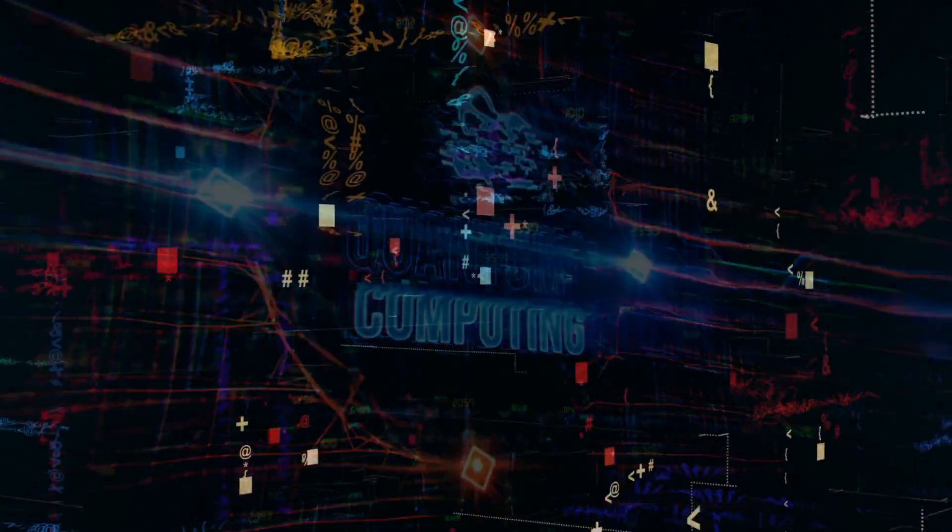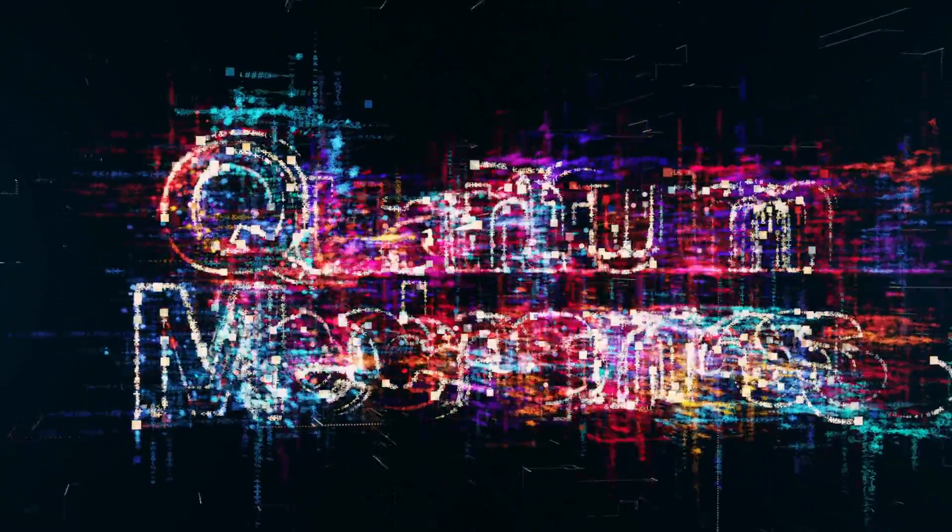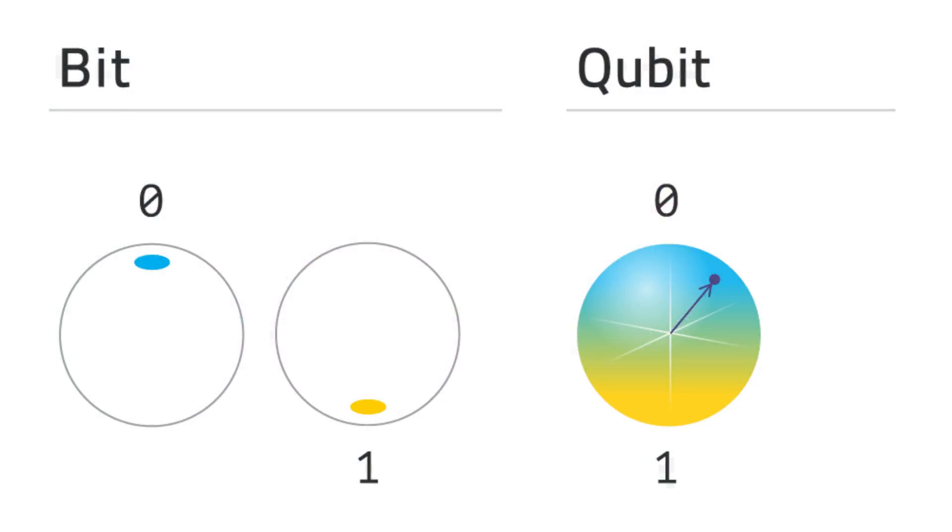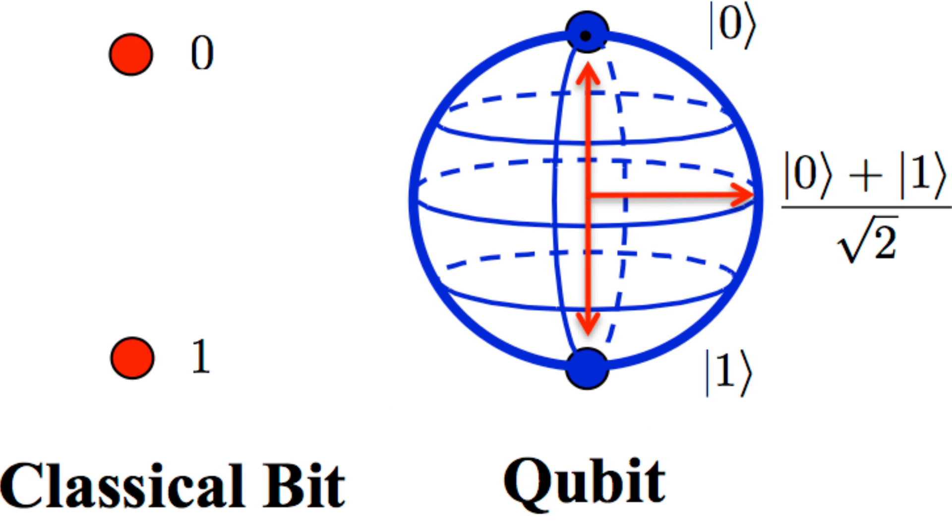Let's start with the basics. A quantum computer is a computer that uses quantum mechanics to process information. Unlike classical computers which use bits to represent data as either 0 or 1, quantum computers use quantum bits or qubits.